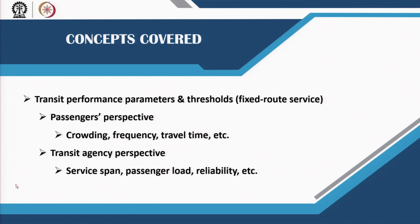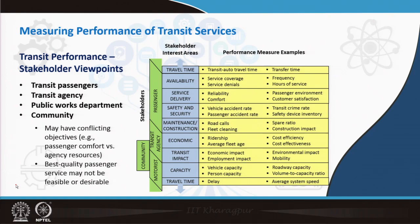Here we will give you an overview of how you can select these parameters based on the passenger's perspective as well as the transit agency perspective. These performance parameters are related to fixed route services — any public transportation system running on a fixed route and not on a flexible on-demand route. When we look at the entire spectrum of transit performance, there are four different viewpoints that are usually indicated, corresponding to four different stakeholders of public transportation.